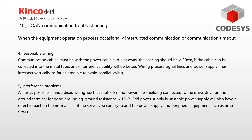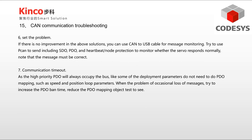Regarding interference problems — as much as possible use standardized wiring, such as connecting motor PE and power line shielding to the drive, ensuring the drive ground terminal has good grounding with ground resistance less than or equal to 10 ohms. Unstable grid power supply will also have a direct impact on normal servo use. You can try adding noise filters to the power supply and peripheral equipment. If none of the above solutions work, you can use a CAN-to-USB cable for message monitoring, and try sending messages including SDO, PDO, and heartbeat/node protection to monitor whether the servo responds normally.